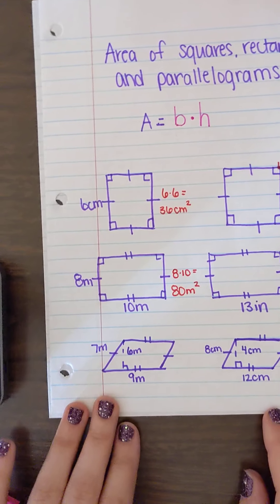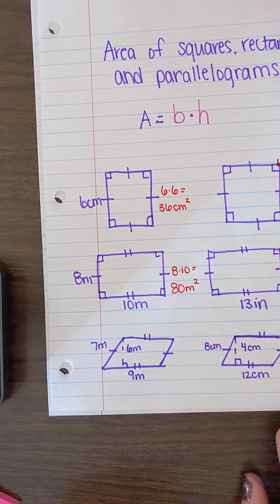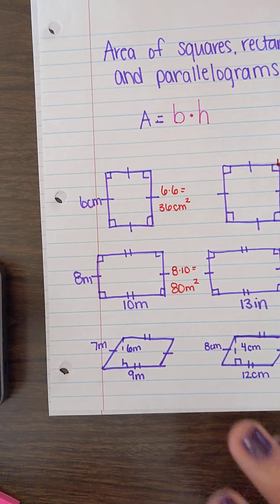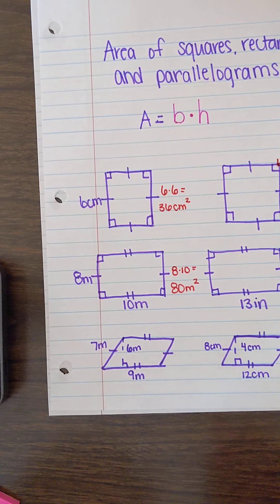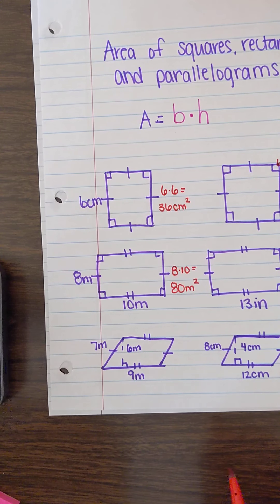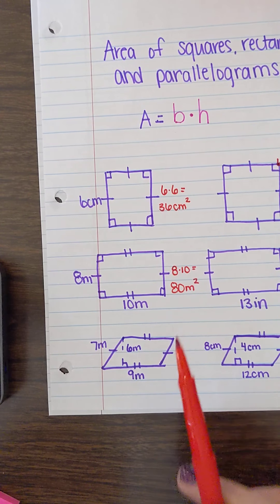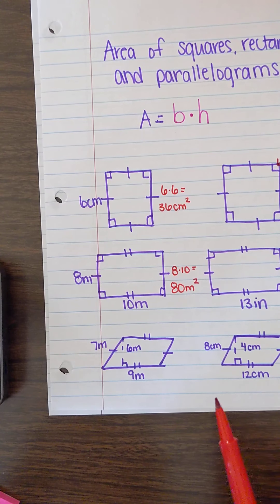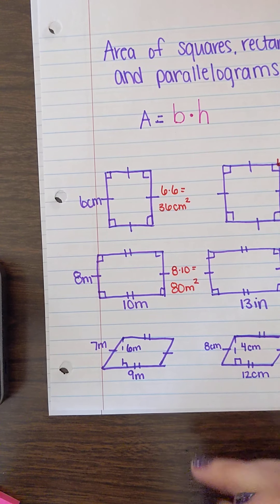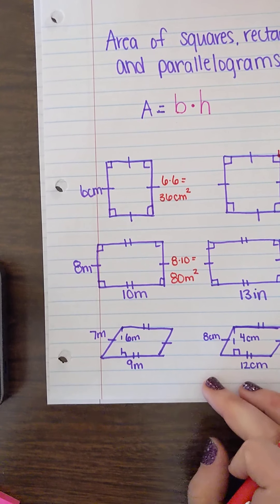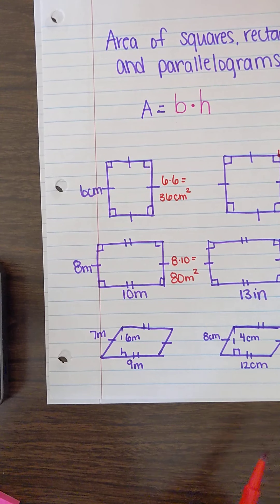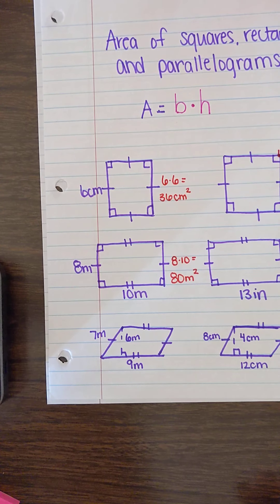The last shape we're going to talk about is called parallelograms. In our CPM textbook, we actually saw a lot of these — they spend a lot of time on parallelograms. It's the same formula, base times height, because parallelograms are really just rectangles in disguise.